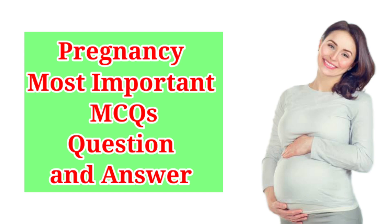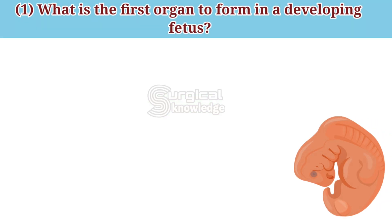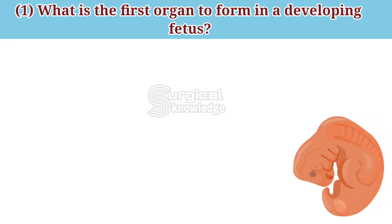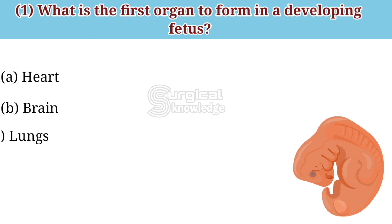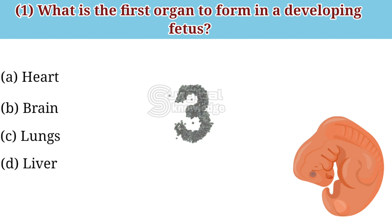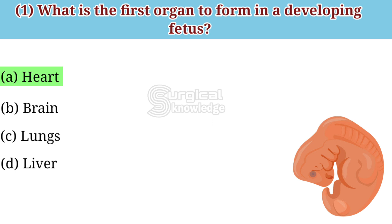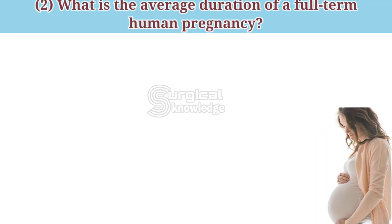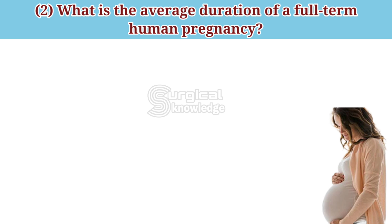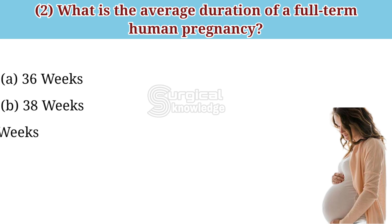Hello friend, in this video we will discuss the most important MCQ questions and answers on pregnancy. So let's start. What is the first organ to form in a developing fetus? Options: heart, brain, lungs, liver. The correct answer is heart. What is the average duration of a full-term human pregnancy? Options: 36 weeks, 38 weeks, 40 weeks, 42 weeks.